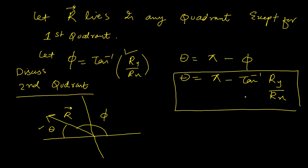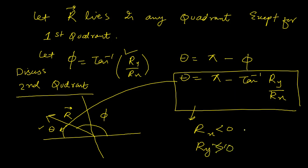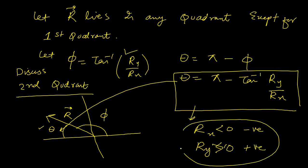Instead of calculating your direction by the basic formula, you subtract phi from pi to get the correct angle. This holds when Rx is negative and Ry is positive — that is the second quadrant situation. You use this formula to find the direction in the second quadrant.